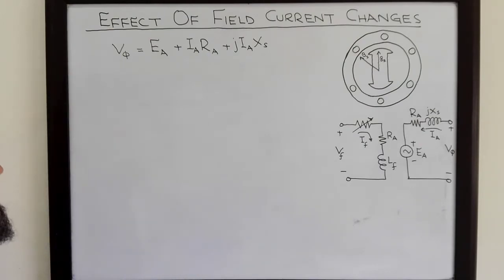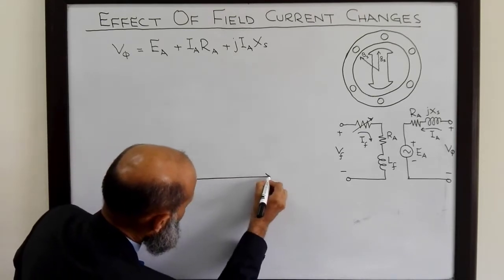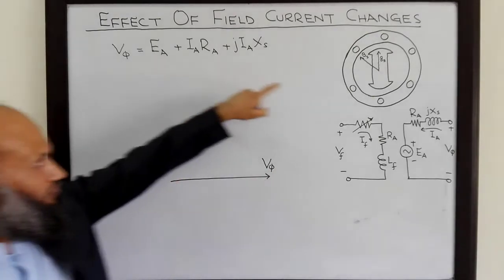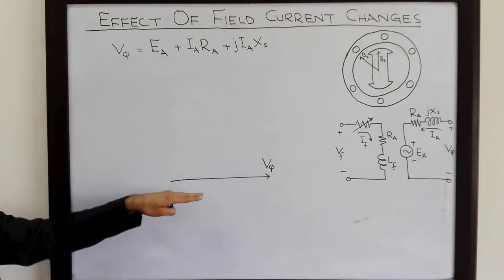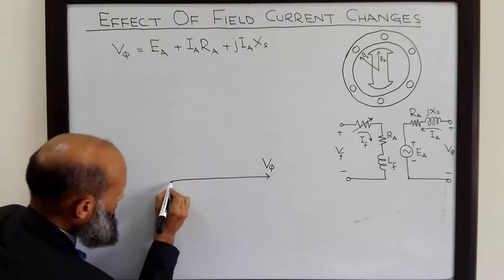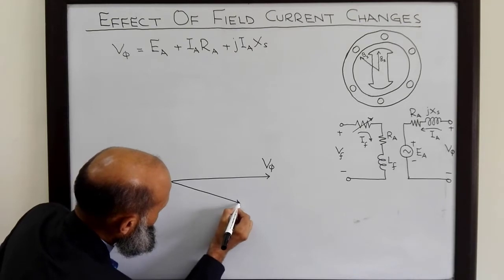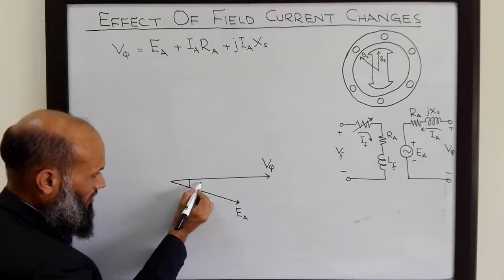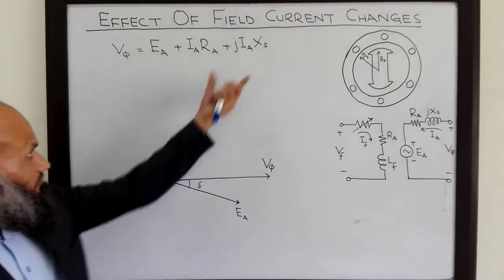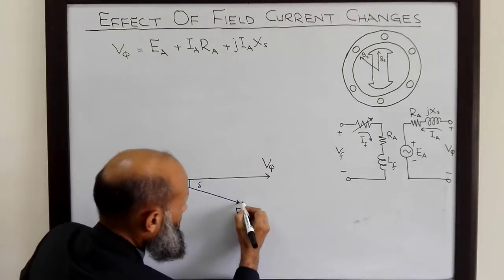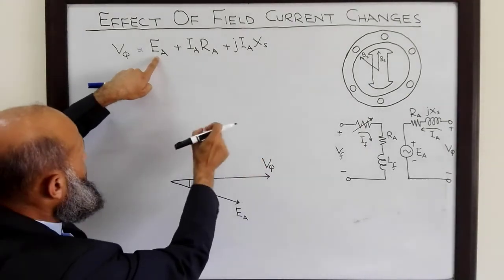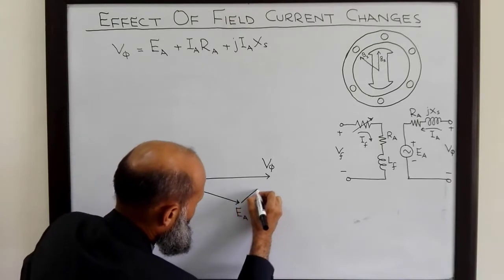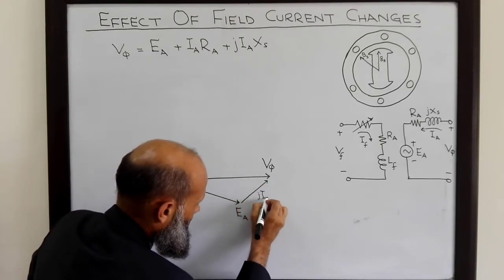Taking V_phase as the reference voltage, we have the phasor V_phase. For the case of synchronous motor, the phasor for Ea will lag behind the phasor for V_phase. This angle between them we call the torque angle. V_phase is the sum of Ea and the voltage jIaXs.